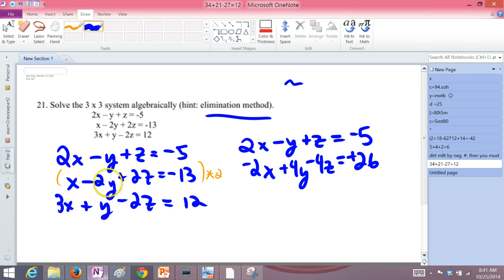Just double and change sign. Double and change sign to get a 2x. Double and change sign to get a 4y positive. Double and change sign to get a negative 4z. Double and change sign to get a positive 26.